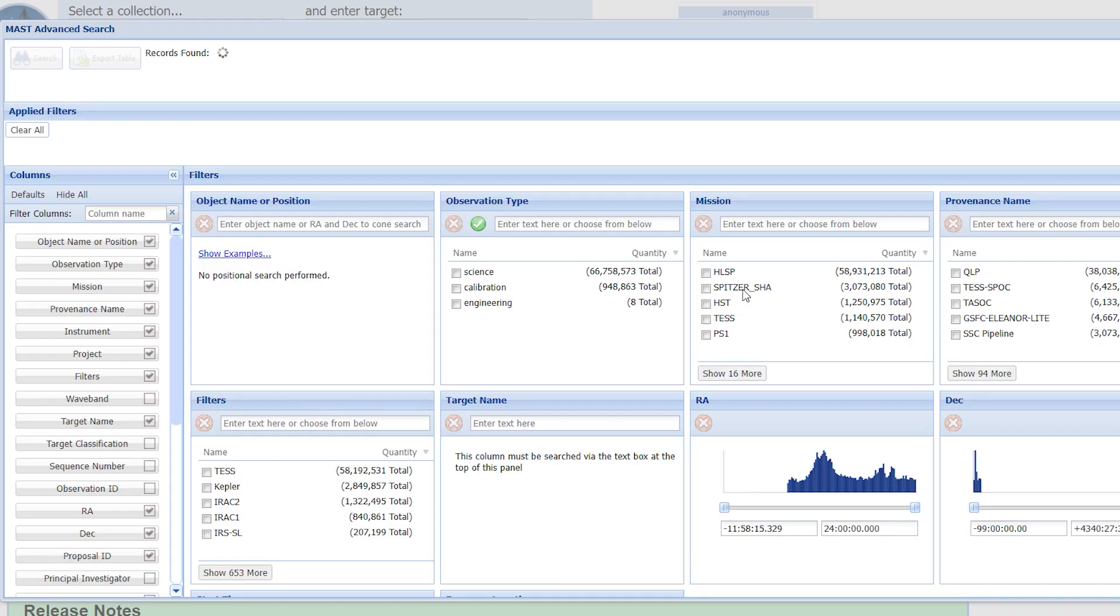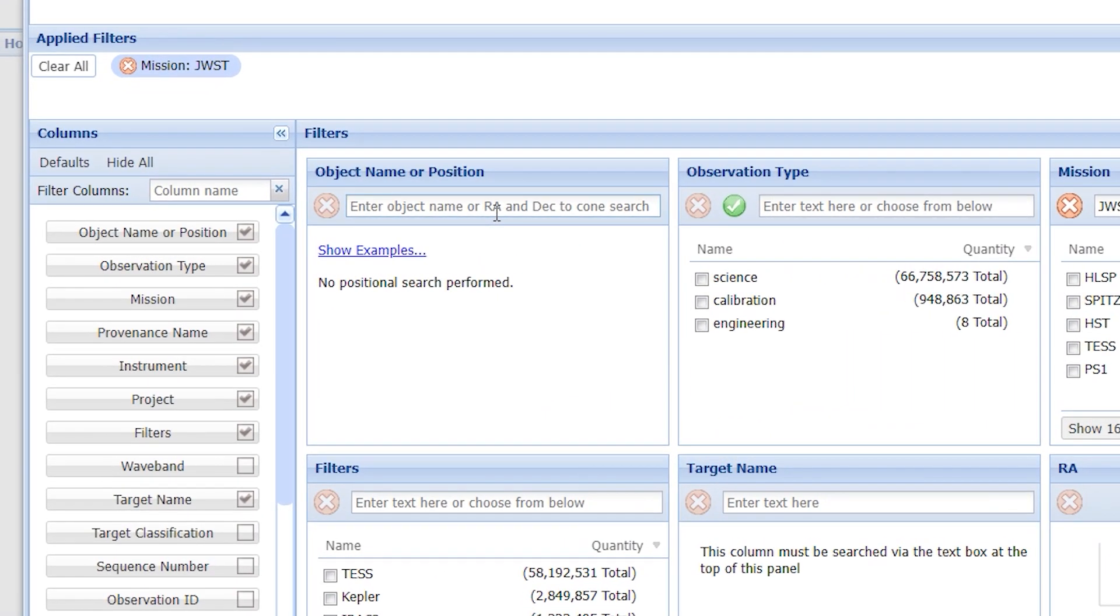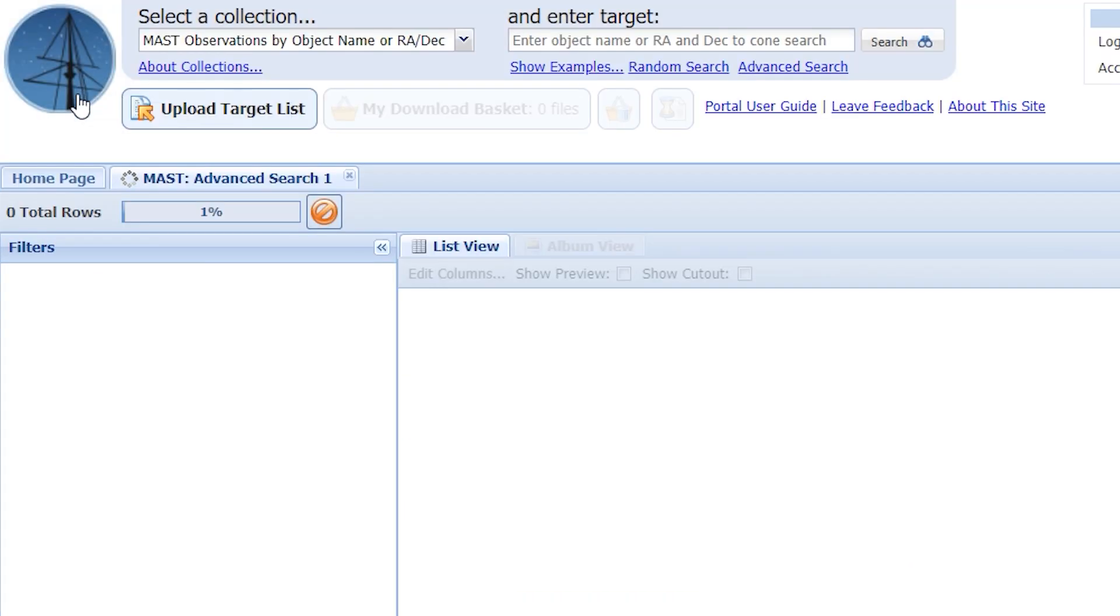Then, in the Mission box, type JWST and press Enter. This will find an enormous amount of data, but if you're interested in a specific search, you can simply go to the object name. And if you want records for the Carina Nebula, just write NGC3324 and press Search in the top left of the screen.